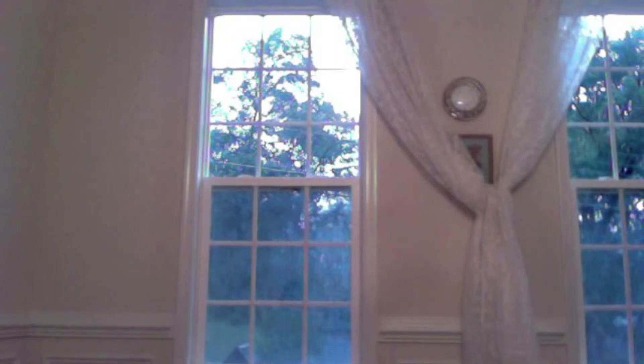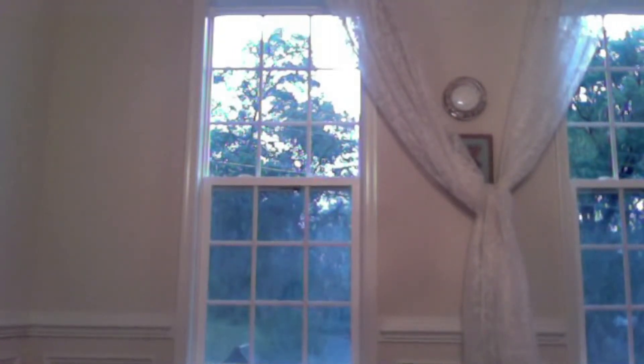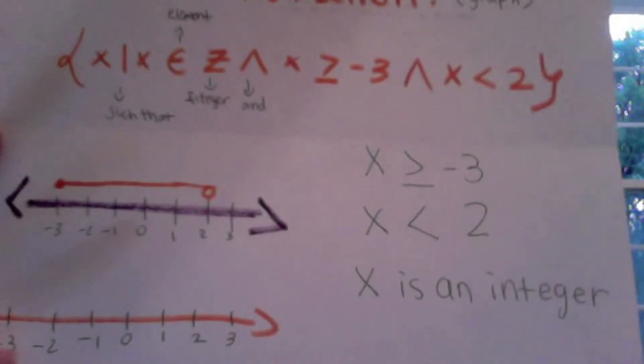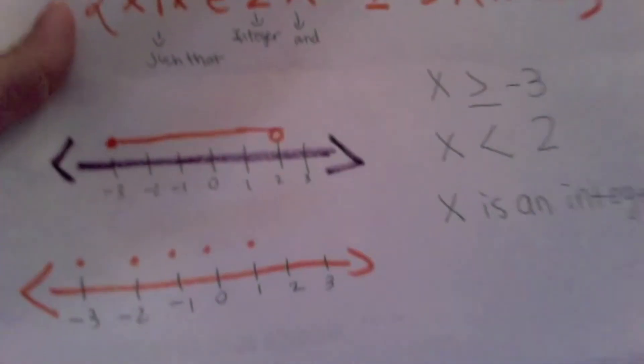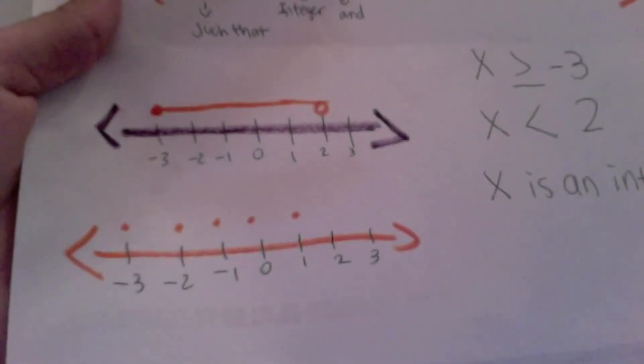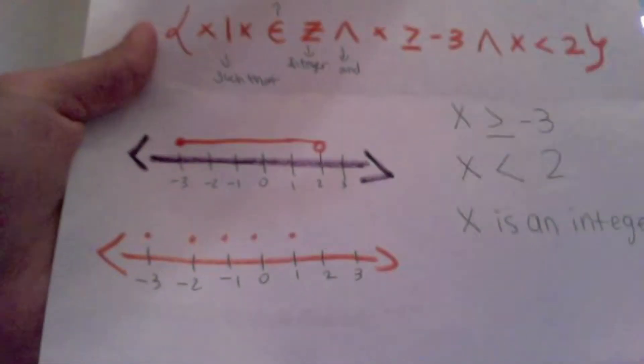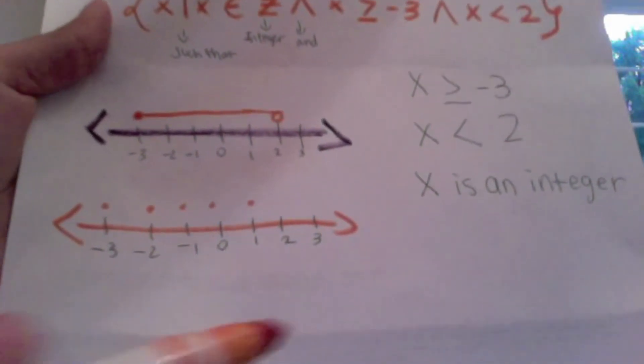So we just have to draw another number line if you encounter a situation like this. On this new number line, we put a filled-in circle on top of negative 3 because it can be equal to negative 3. This is our finished graph because X is greater than or equal to negative 3, so X equals negative 3, negative 2, negative 1, 0, and 1. We cannot say X equals 2 because it says X is less than 2. This is our graph for this set builder notation.